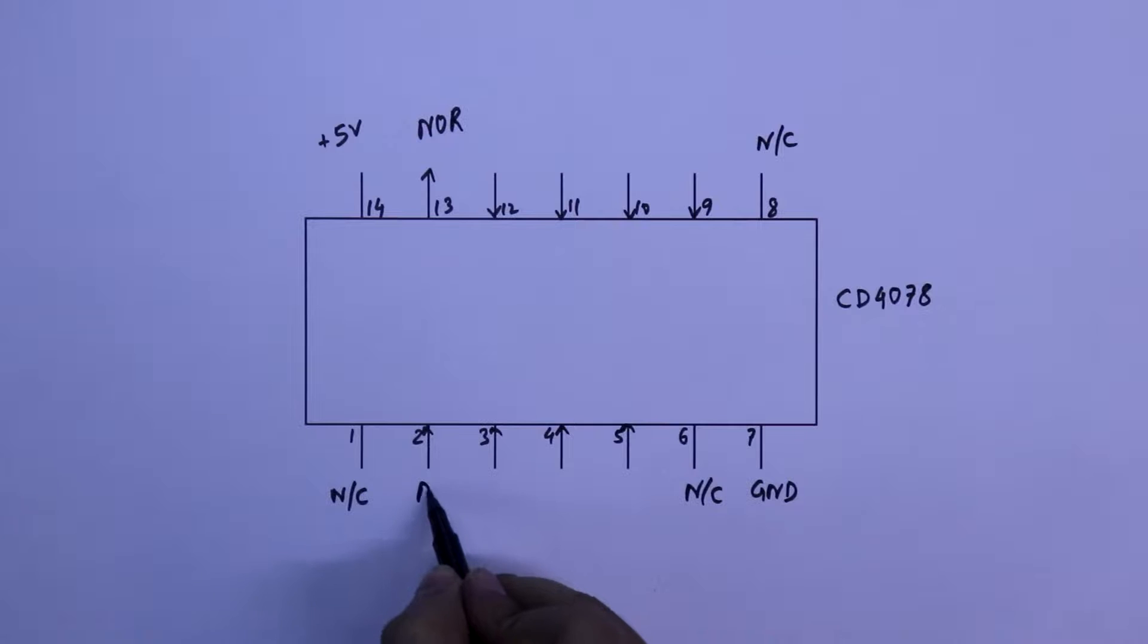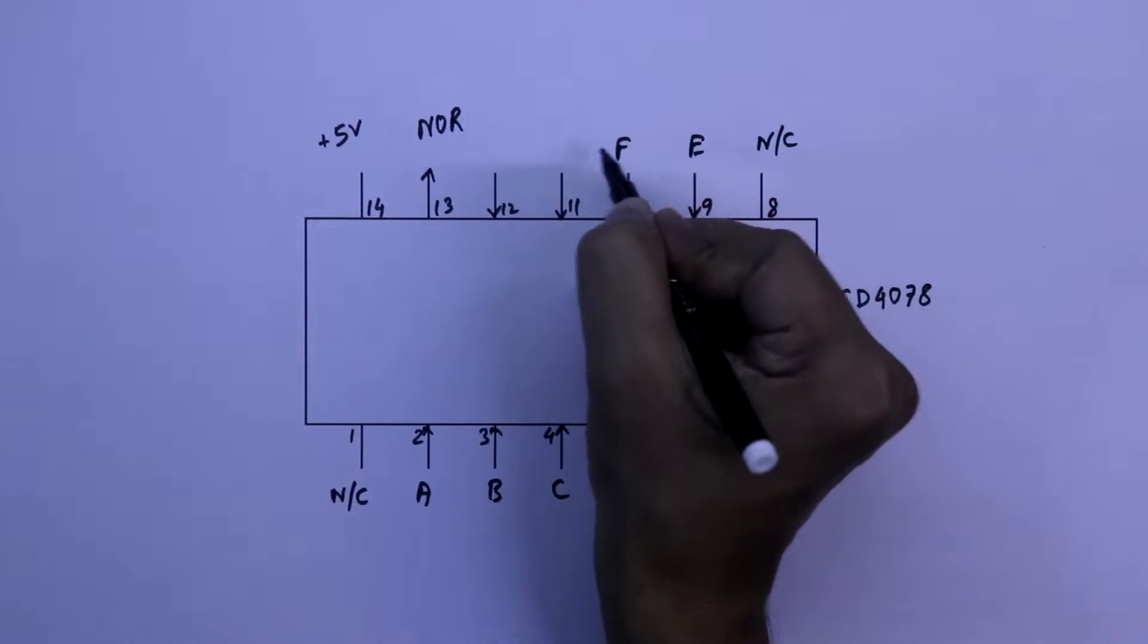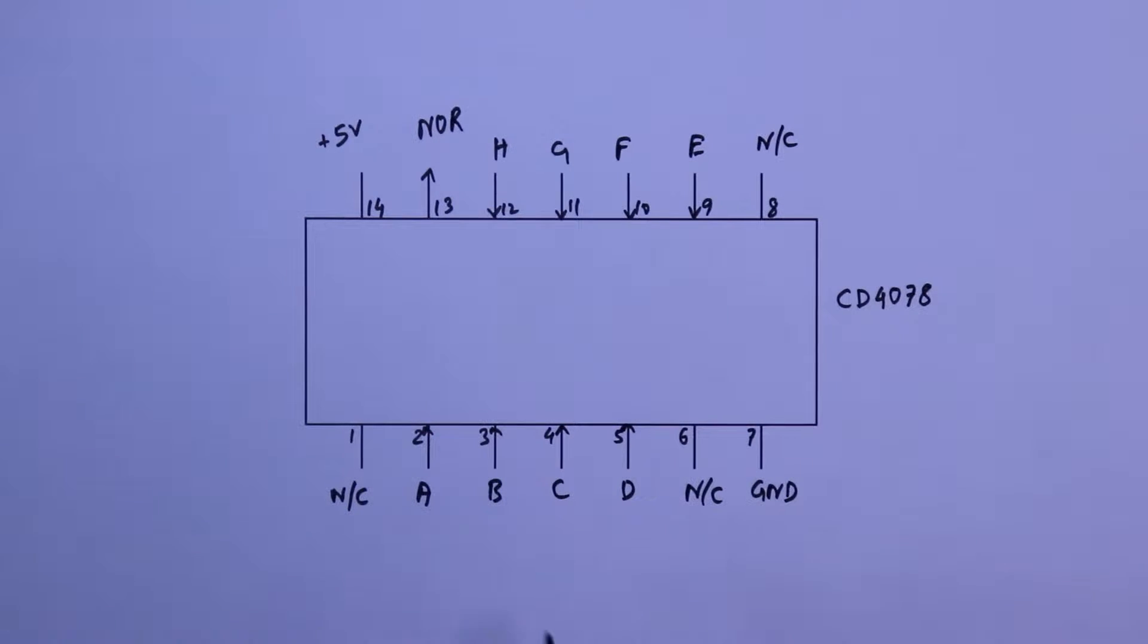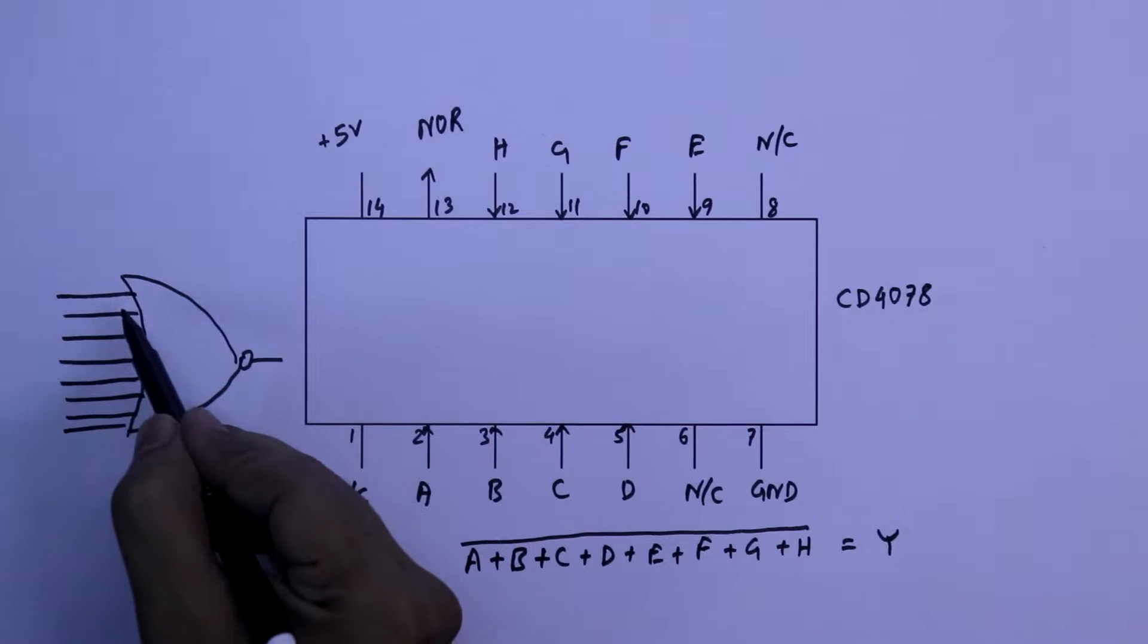We call it from A, B, C, D, E, F, G, and H. So the output will be A plus B plus C plus D plus E plus F plus G plus H, and whole bar equal to Y. The NOR output. We have 8 inputs from A to H.